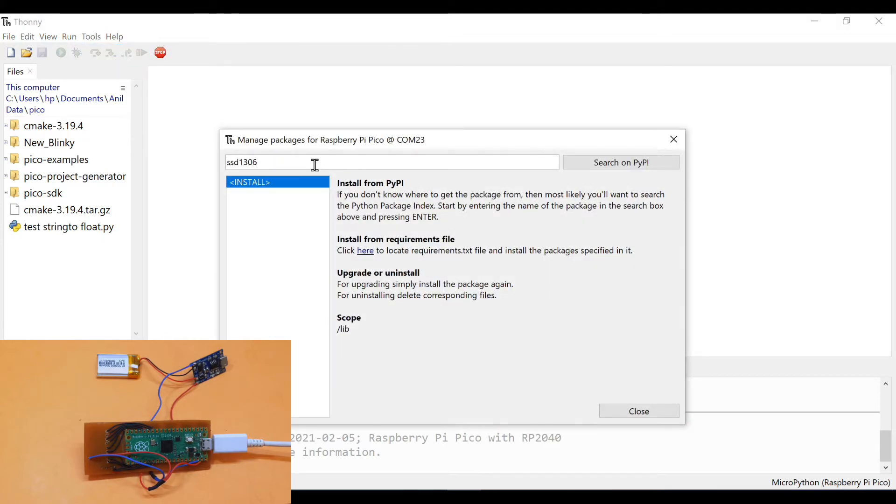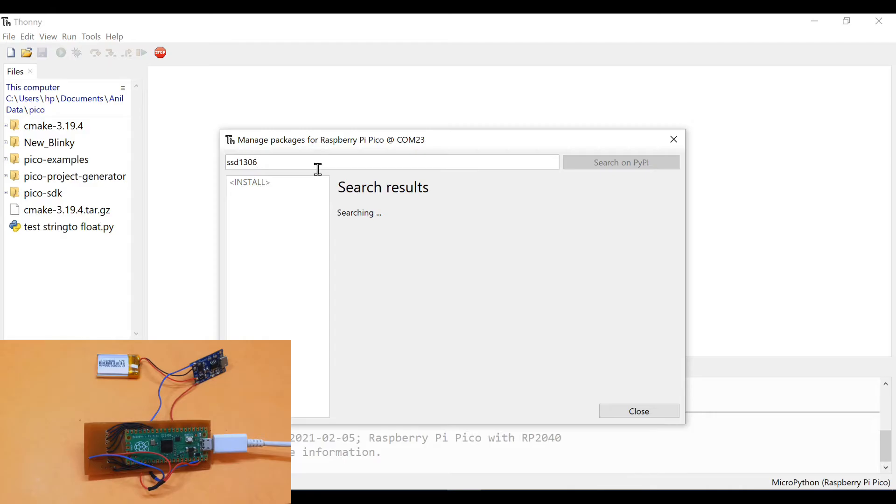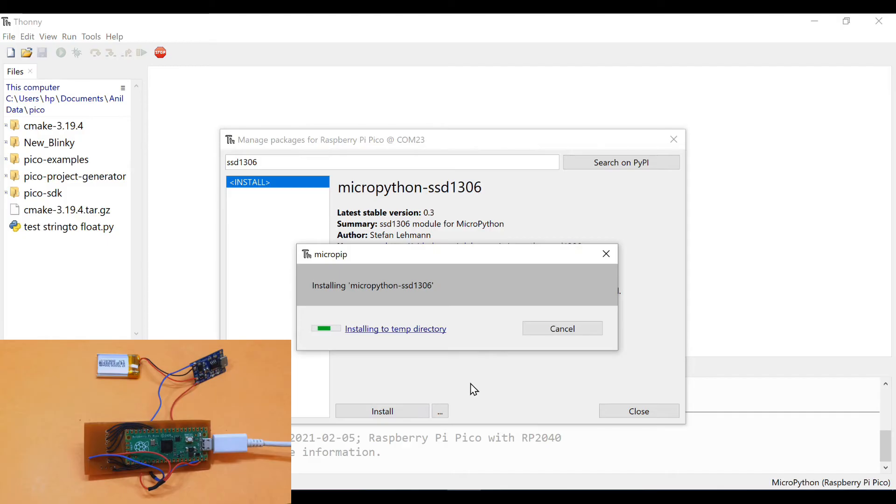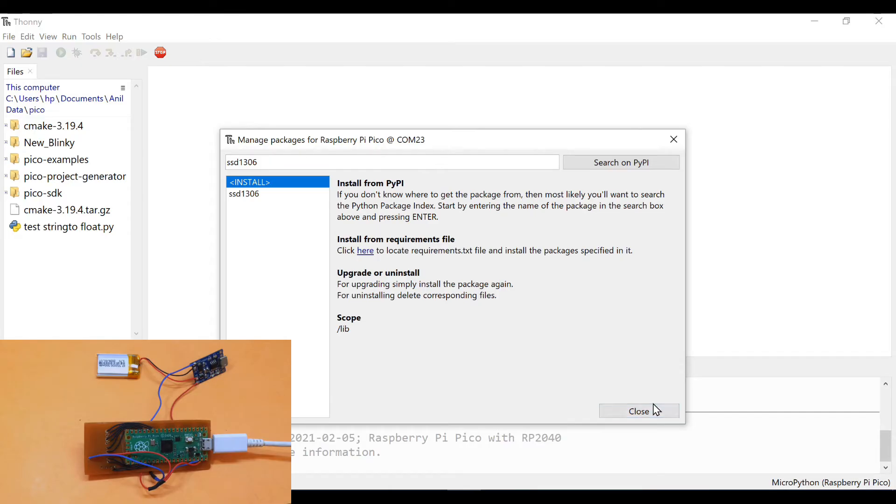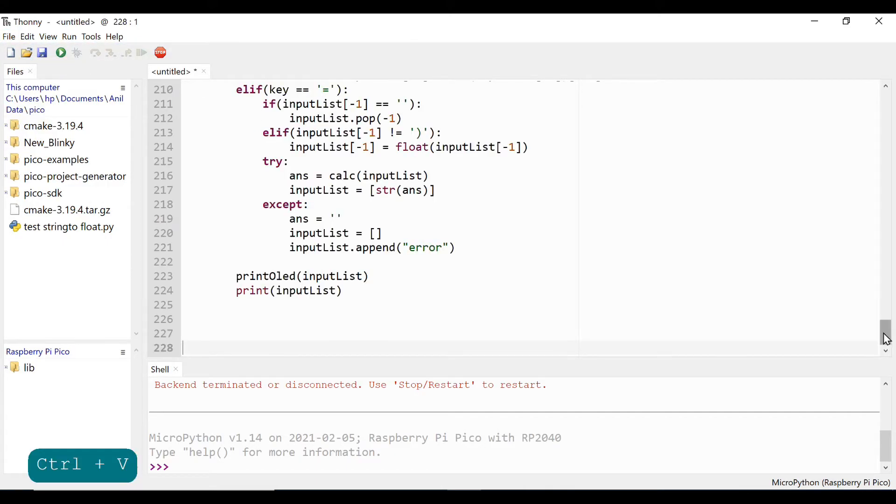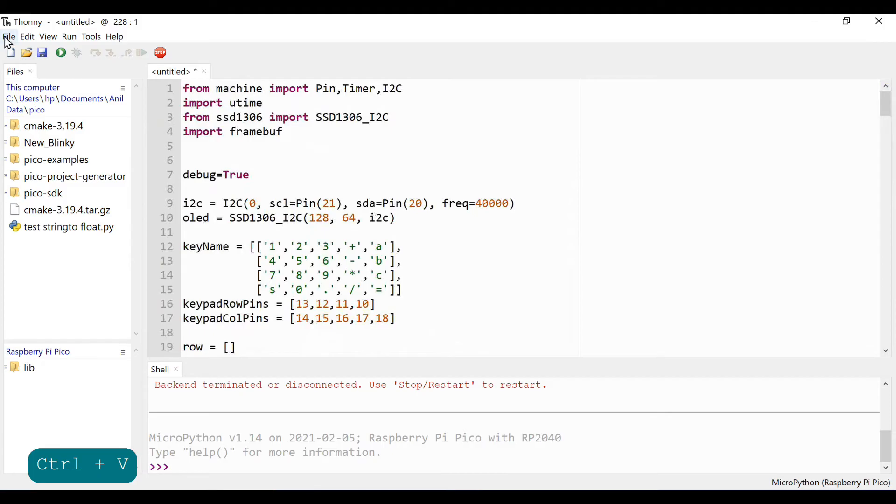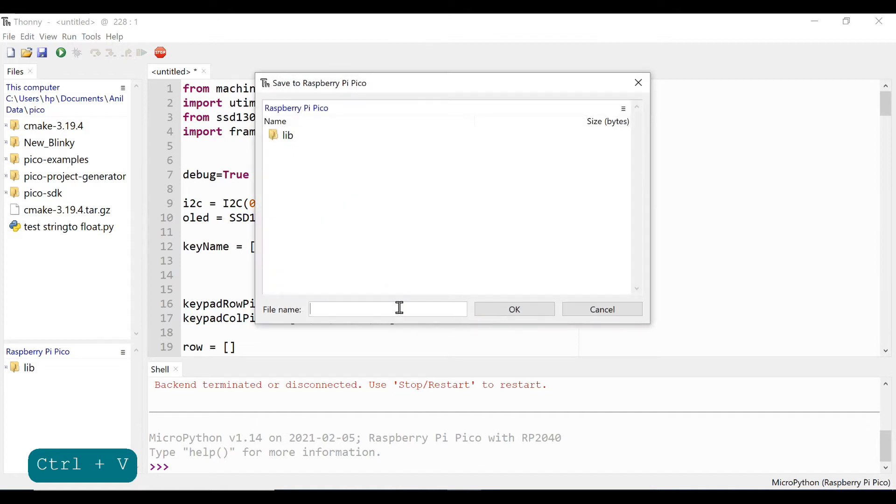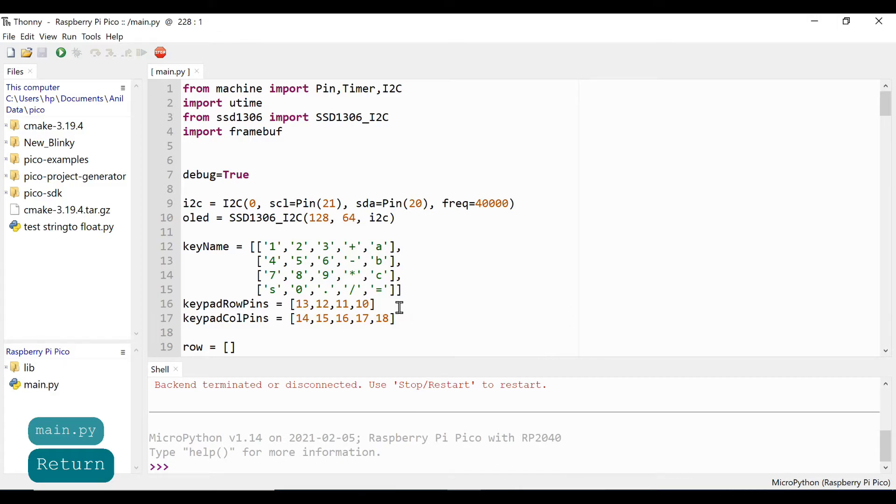Before going for the main program, we need to install a library for our OLED display. After that we can save our main program to the flash memory of Pico. And there you go, the Pico is now programmed with the Pi Calc firmware.